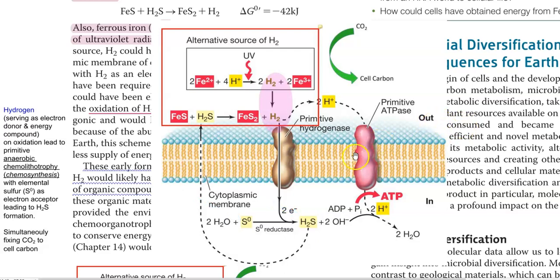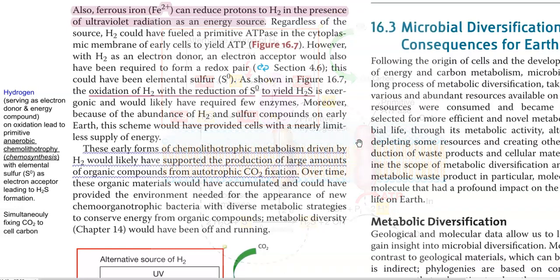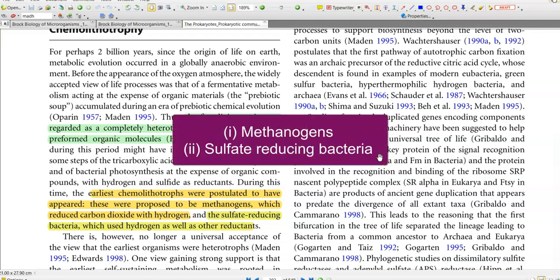Simultaneously, during this process, carbon dioxide is being reduced into cell carbon by a Calvin cycle or by any other kind of carbon fixation cycle that may have operated in the earlier environment. Thus, the earliest chemolithotrophic organisms that proliferated on the earth's surface include mainly methanogens, which can reduce carbon dioxide with the help of hydrogen as an energy source.